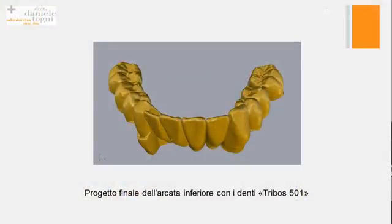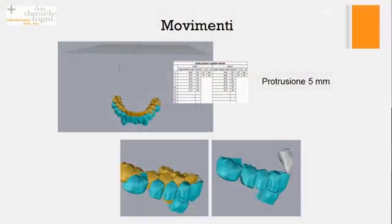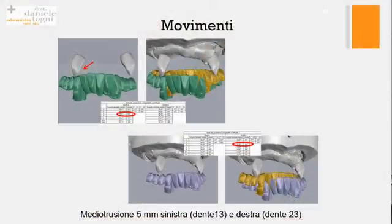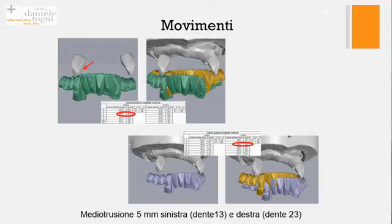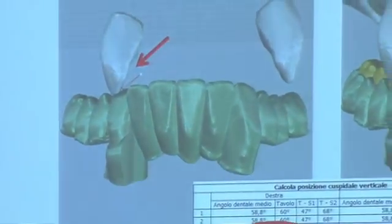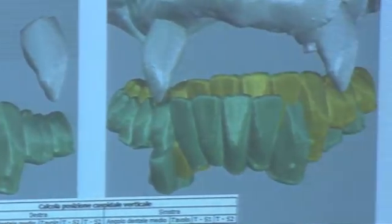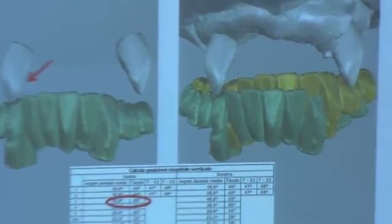Questo è il risultato finale ottenuto sull'arcata inferiore con questi denti del commercio. Passiamo alla fase dinamica. Questo è il movimento di protrusione di 5 mm secondo il tracciato della paziente. I denti azzurri sono quelli protrusi e cominciamo a costruire il design della protesi superiore. Vi invito a guardare la freccia rossa: i denti del commercio che abbiamo scelto avevano quella definizione e chiaramente non potevamo far rispettare la lineetta rossa che è la guida. Vi farò vedere alla fine come abbiamo risolto questa questione dell'inclinazione della guida.